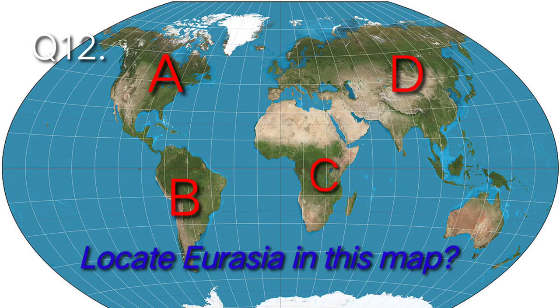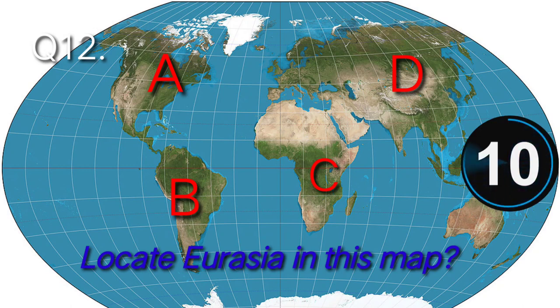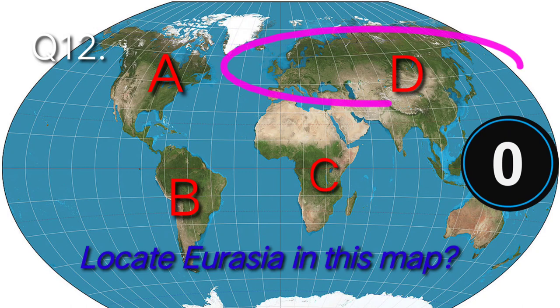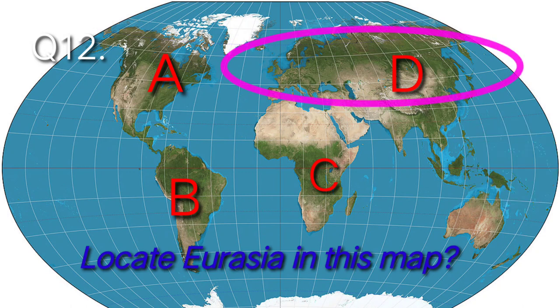Question number eleven: Locate Eurasia on this map. Answer: D, which I am locating on this map.